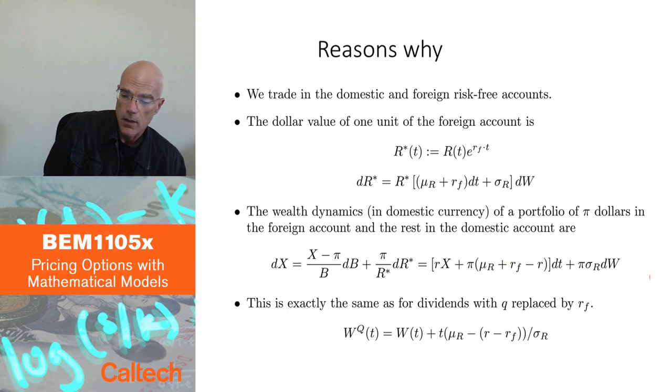And therefore, exactly the same as with the dividends, the Brownian motion under the pricing probability Q is going to look like this. Where again, instead of the dividend rate, which we had here before, we now have r_F, the foreign interest rate.